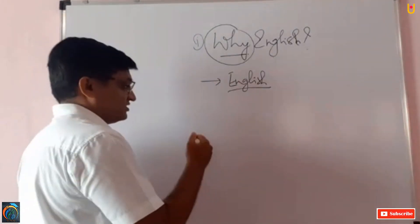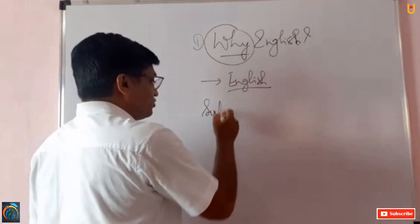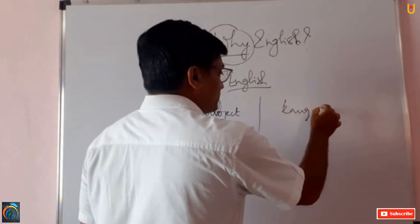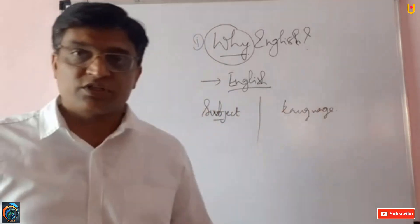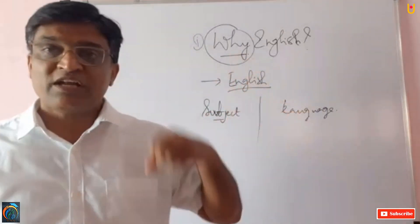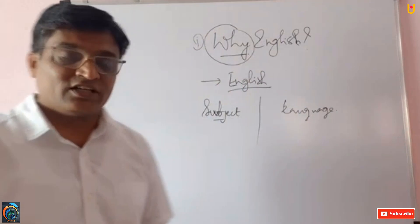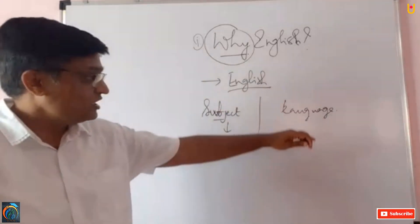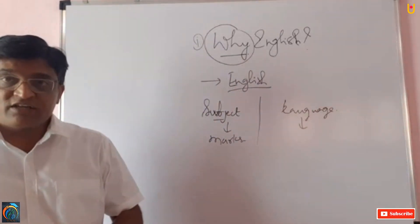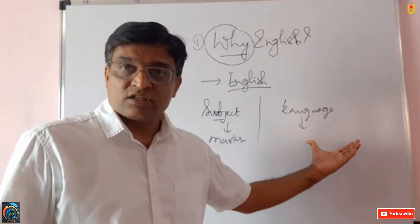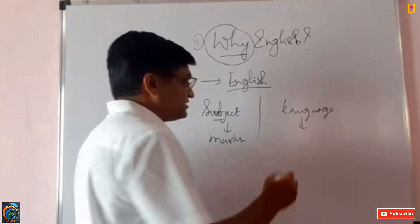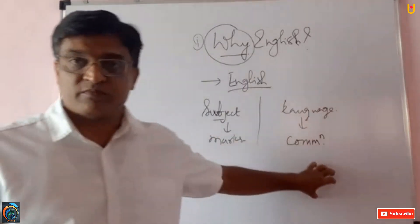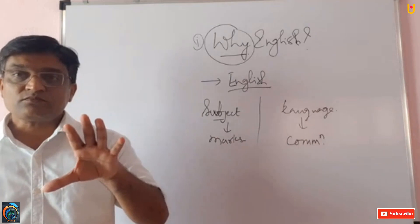English has got two parts when you learn it in school or college: as a subject and as a language. As a subject, you prepare for the examination and score good marks — marks are the indicator of a subject. But the indicator of language is your communication. This is a basic difference.